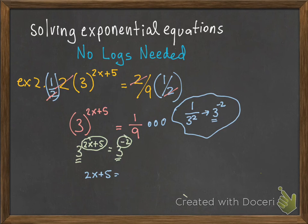I get 2x plus 5 equals negative 2. Subtract 5 and then divide by 2, and it looks like x is going to give me negative 7 over 2.